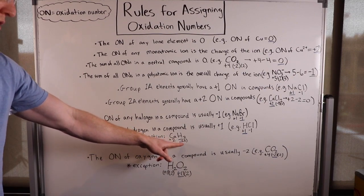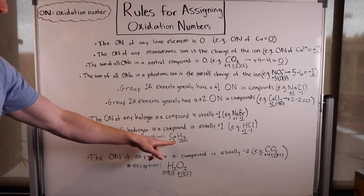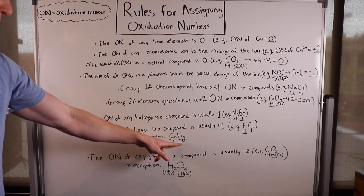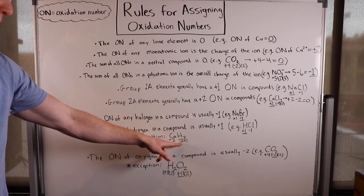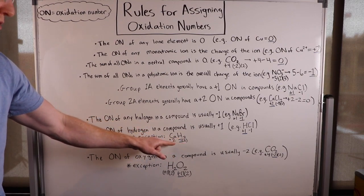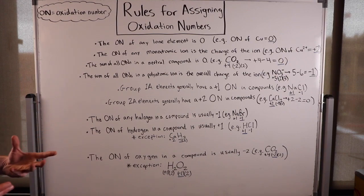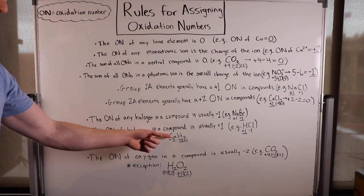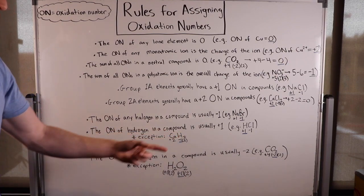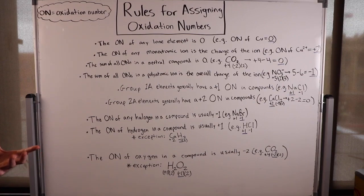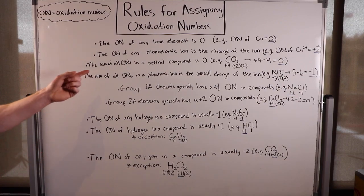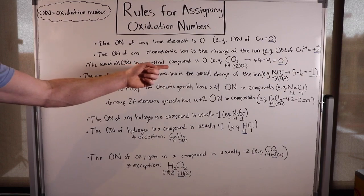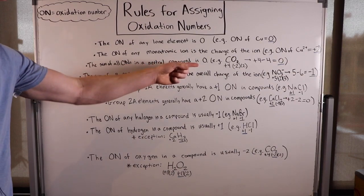The hydrogen, to balance out that plus two, will have to have a minus one oxidation number because there are two of them. So two times minus one equals minus two, and plus two minus two equals zero, which is the overall charge of calcium hydride — following the rule that the sum of all oxidation numbers in a neutral compound must be zero.